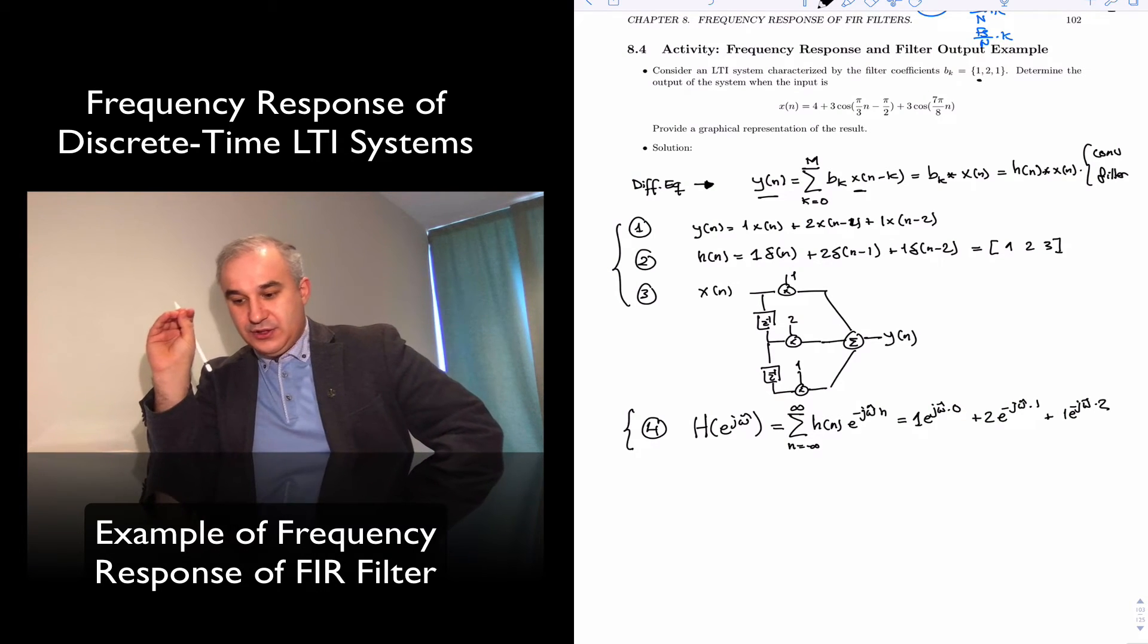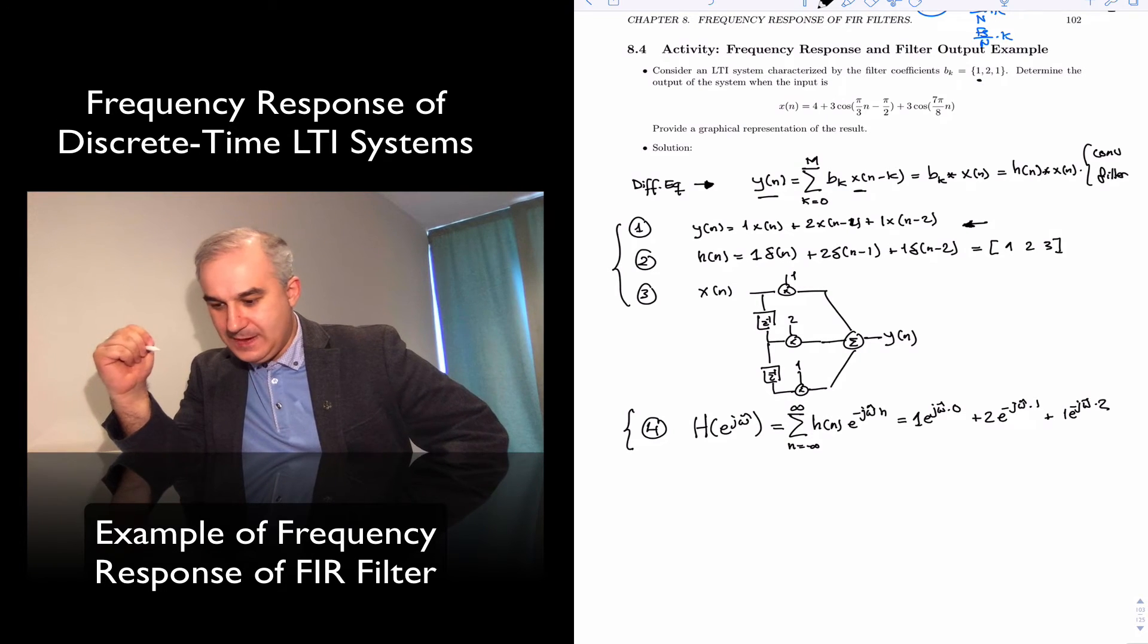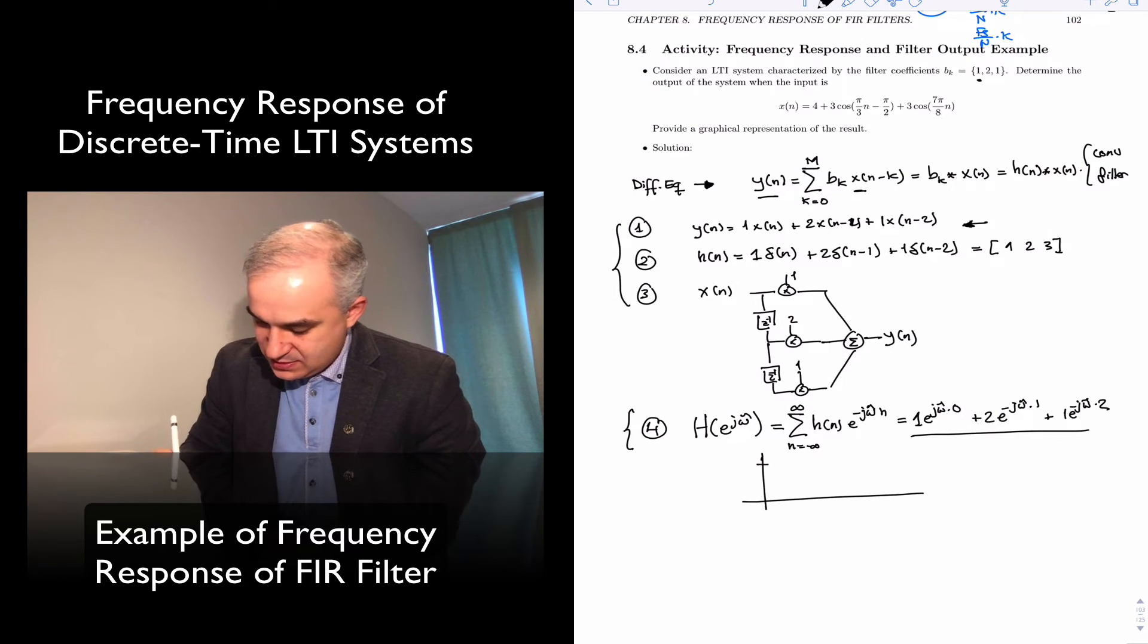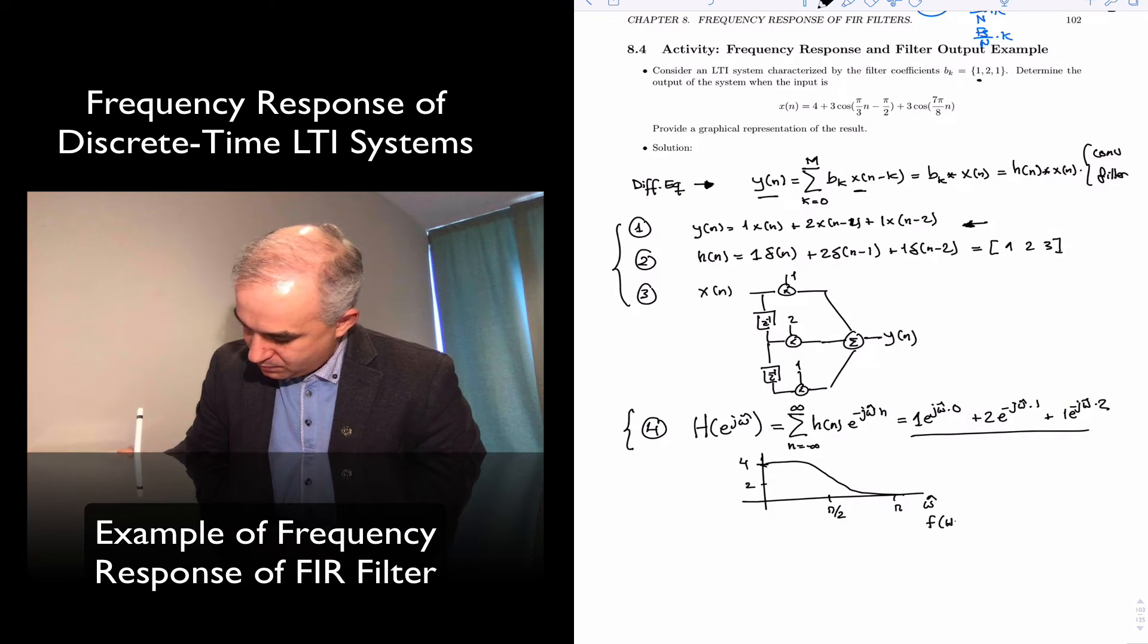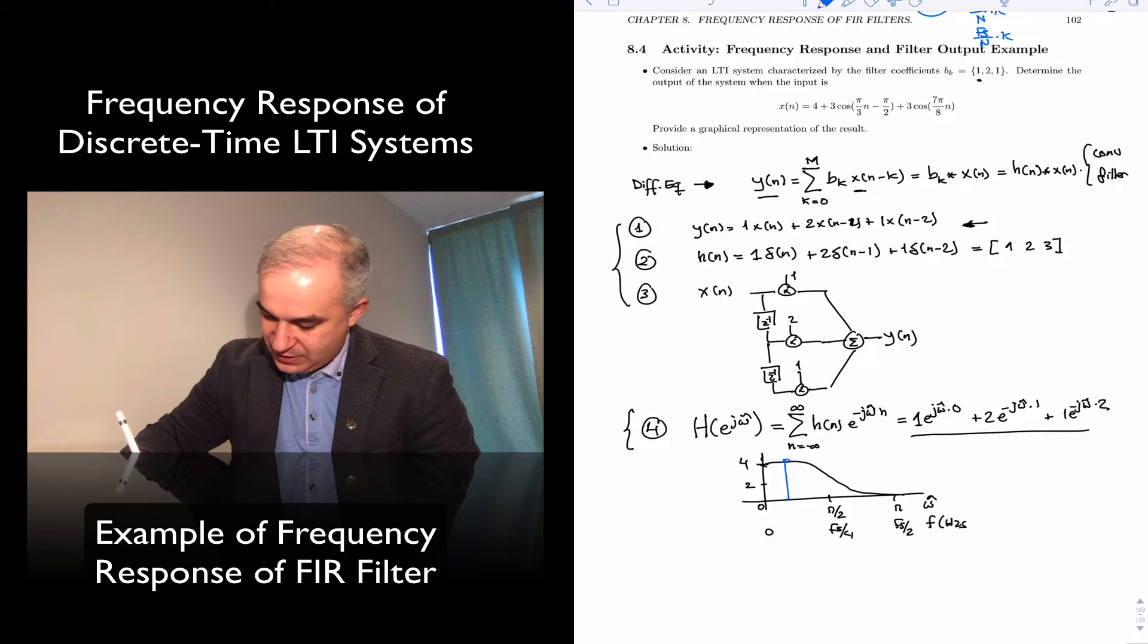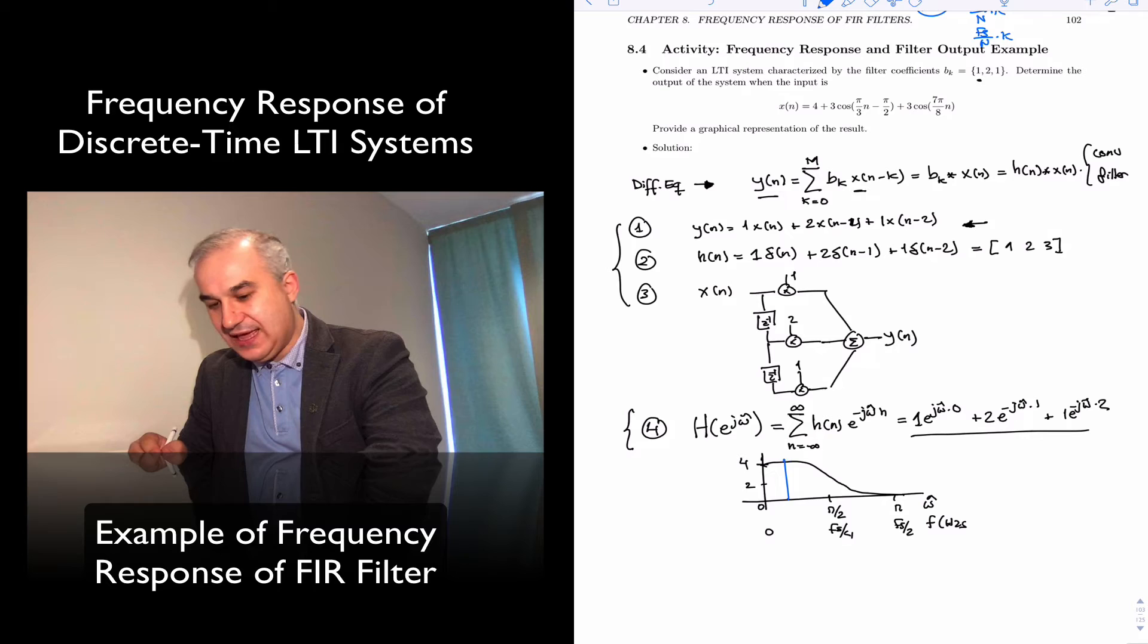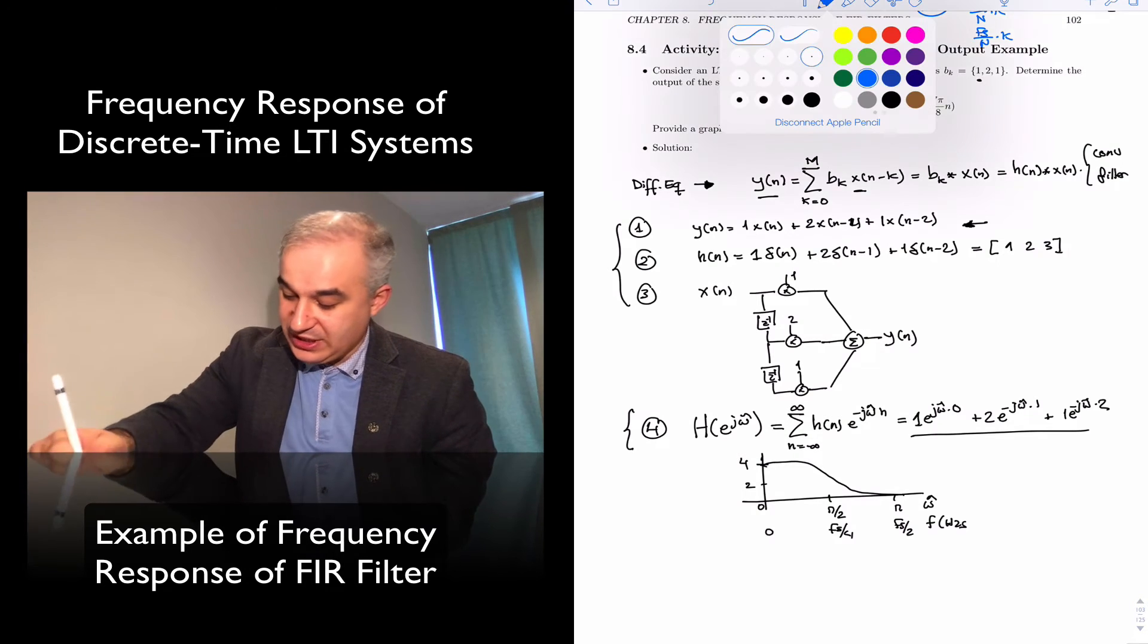So now, let's back up. So we can calculate the output for any input using this expression, using convolution. But now that we also have a frequency response representation that tells us how the system does the output for all frequencies. In the case that the input is a sinusoid, a sinusoid signal, we don't need to do convolution. We can just use the frequency response to find the output.